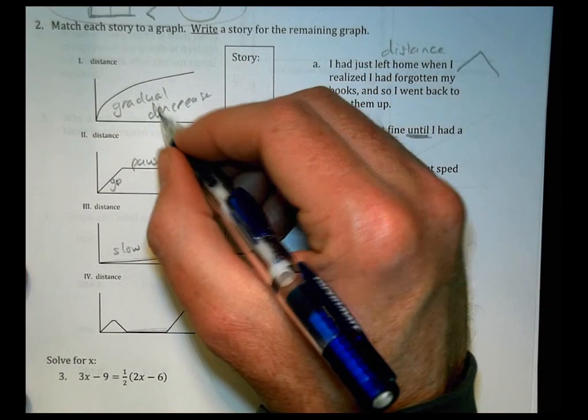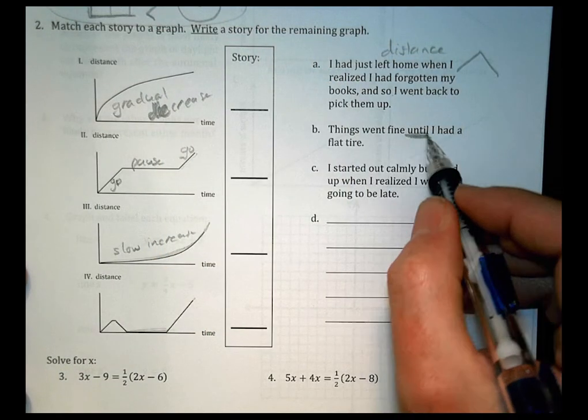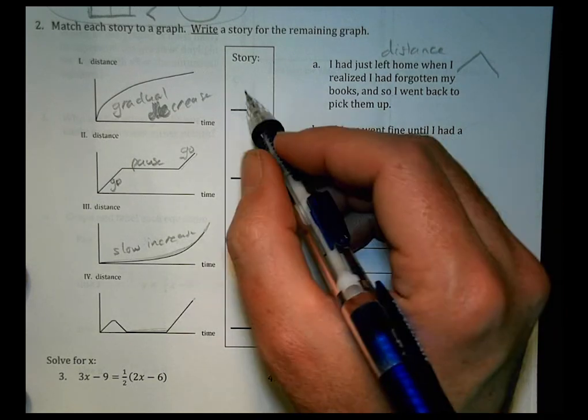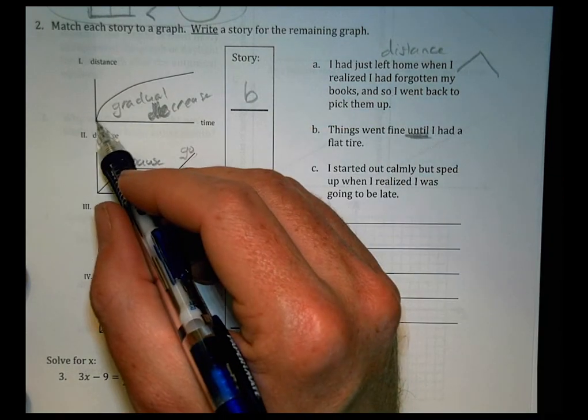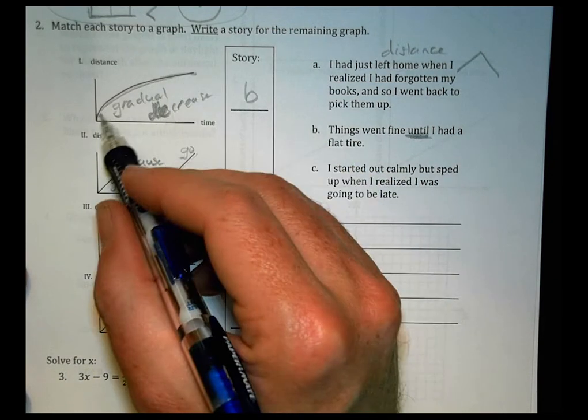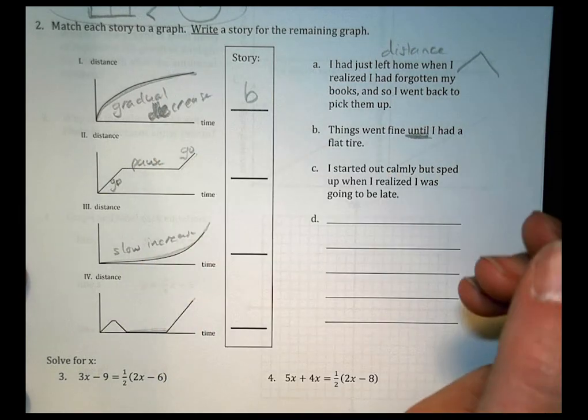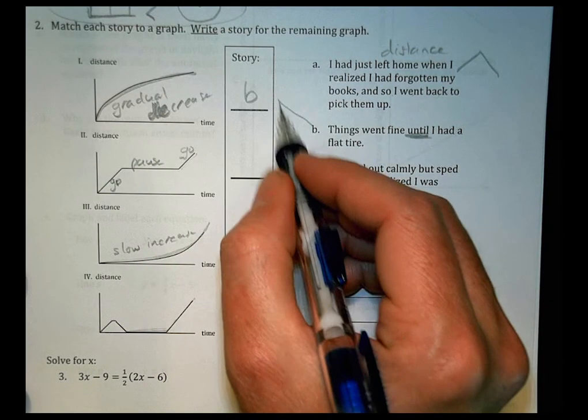So things were going and then things just didn't quite work out. There's a little bit of a, oh, I wrote up here a gradual increase. This is a gradual decrease. I'm so sorry. I misread my own notes here. Decrease here. So B's going to go there. So you see we're going fine and then things start to slow down, right? We're not going quite as far. So this was going fine and then flat tire, my distance got less. So that's why that goes with that one there.